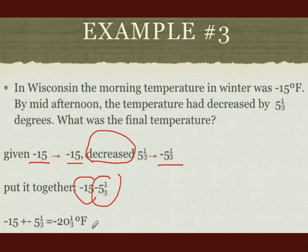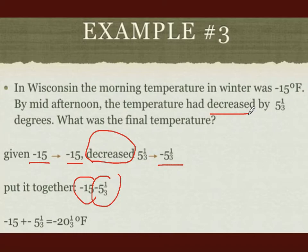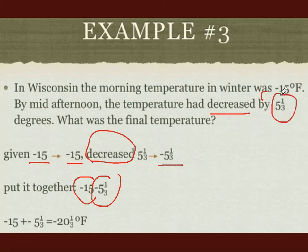Does it make sense? If in the morning it's already negative degrees Fahrenheit and the temperature decreases, it should be even colder. When temperature decreases, it goes down. So from −15, it should go down to −20⅓ degrees Fahrenheit if it decreases that much. It makes sense, and I am convinced my answer is correct. Let's move on to the fourth example.